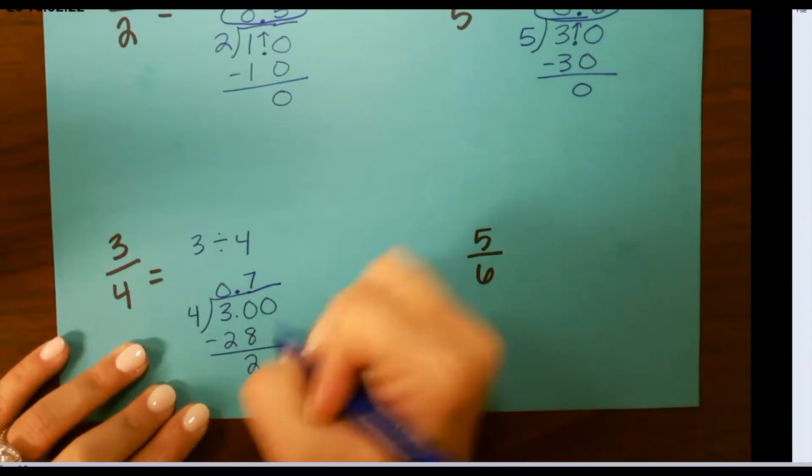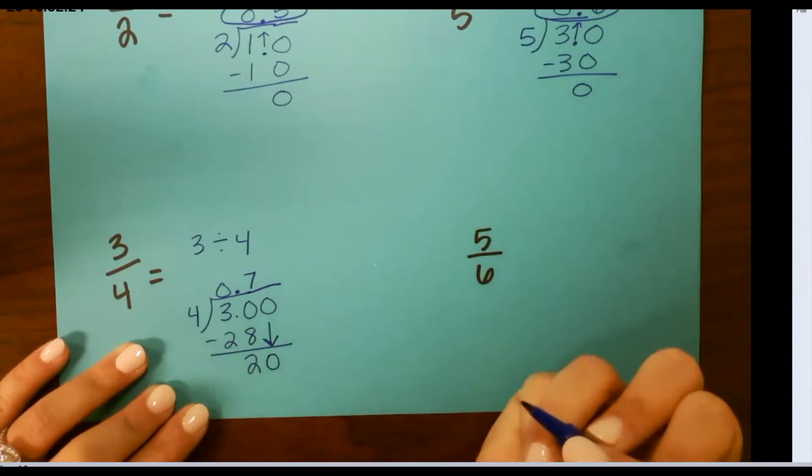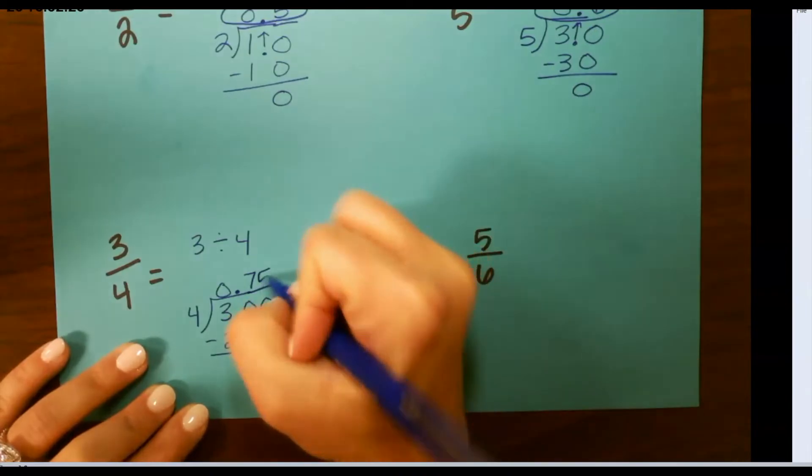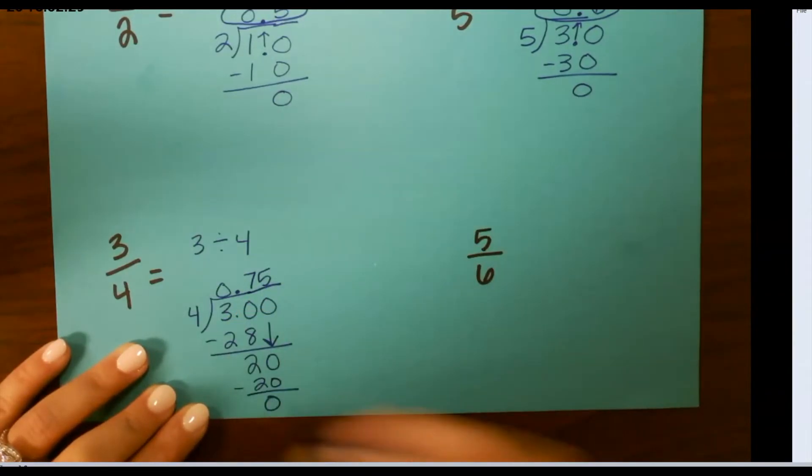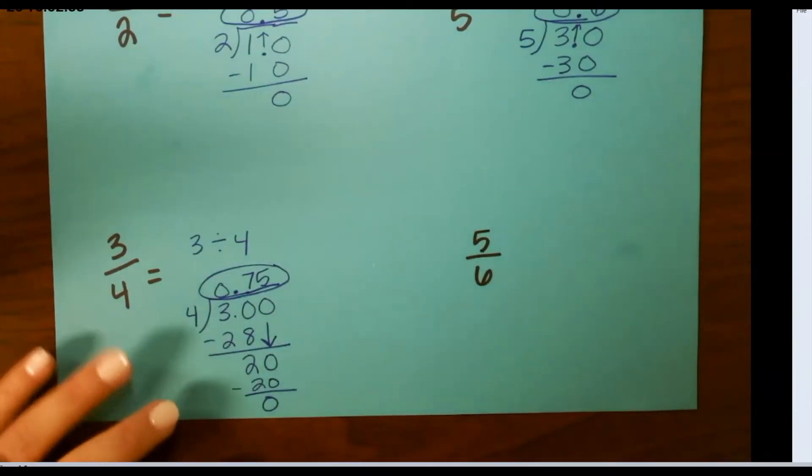Now, I need to add a 0 and drop it down. 4 goes into 20 5 times evenly, so that will give us 0.75 for 3 fourths.